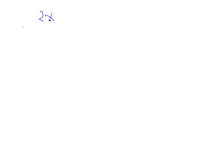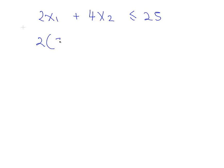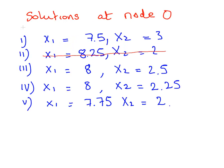So 2x1 plus 4x2 less than or equal to 25. So 2 times the first one, 7.5, plus 4 times 3 is equal to 27. So that's 15 plus 12, so that's equal to 27. That's another one we can rule out as infeasible.